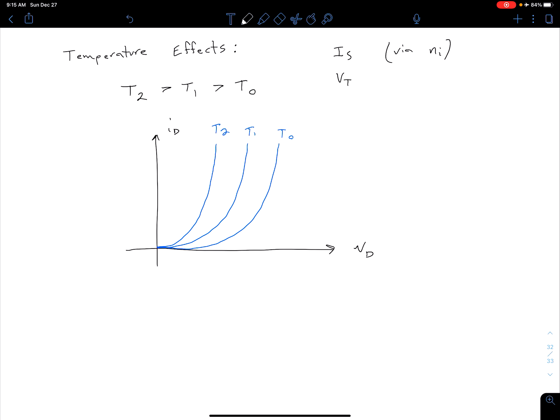As we increase our temperature, we're reducing our turn-on voltage required for the diode. Higher temps lead to reduced turn-on voltage, and we'll come back and talk about the turn-on or cut-in voltage a little more formally in the next video.